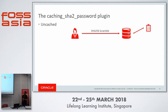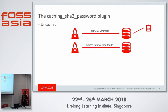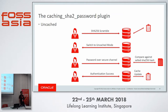When a user wants to connect, the server sends a challenge. The client creates a response using its password and sends it to the server. The server checks its in-memory cache, which maintains a hash of the password per account. If there's no cache entry for the user, it switches to uncached mode, asking the client to send the actual password over a secure channel. The server then compares it against the salted SHA-256 hash stored in the mysql.user table, and if successful, grants access.